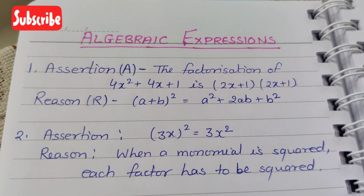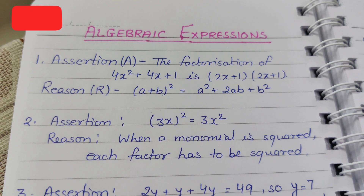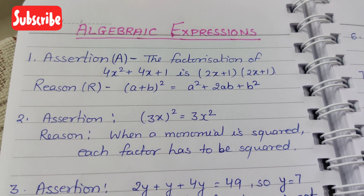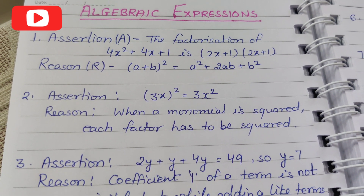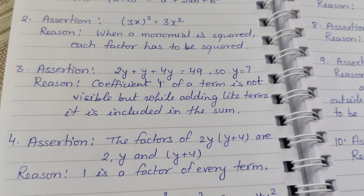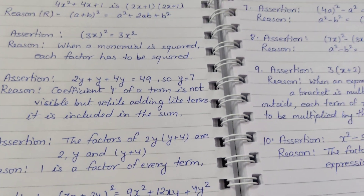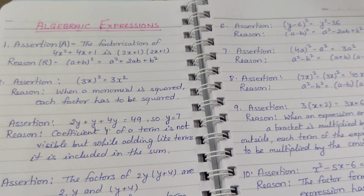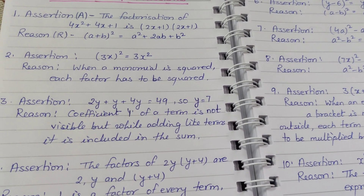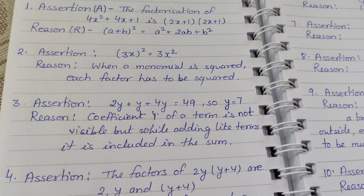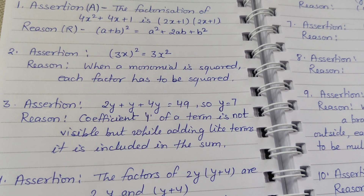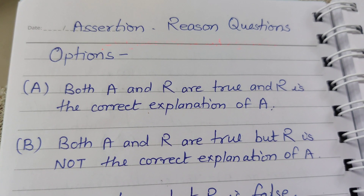We will look at assertion-reason questions from the chapter on algebraic expressions and algebraic identities. First, let's understand the options A, B, C, and D for these questions.